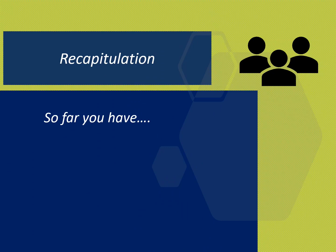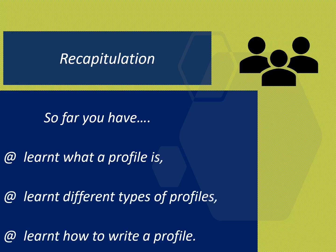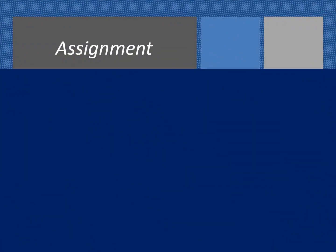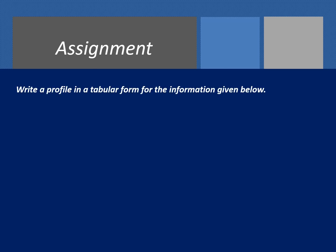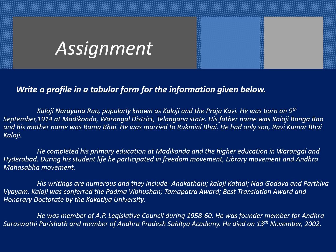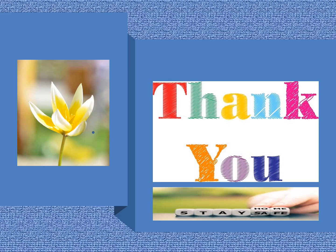Now we have come to the end of our lesson on profile. Let us recapitulate what we have discussed. I hope you learned what a profile is, the different types of profiles, and how to write a profile. Here is an assignment: write a profile in a tabular form for the information given below. The information is in paragraph form, but you have to write it in a tabular form about Mr. Kaloji Narayan Rao, popularly known as Kaloji or the Prajagabe. Hope you understood how to write a profile and its features. Have a nice day. Thank you. Stay home, stay safe.